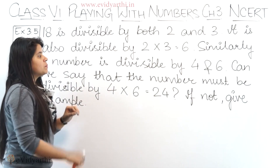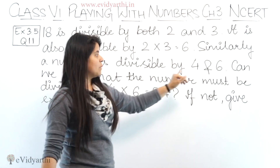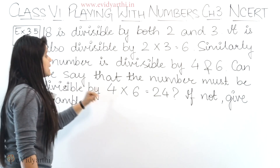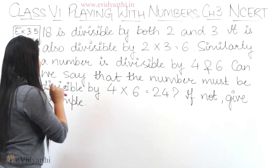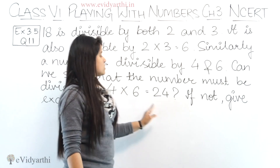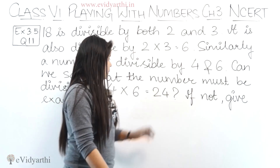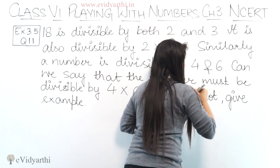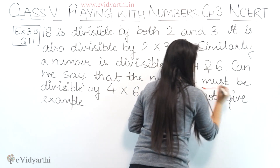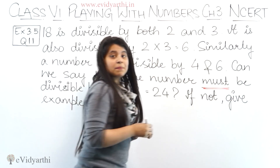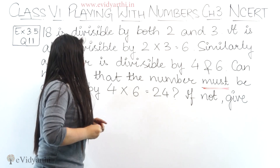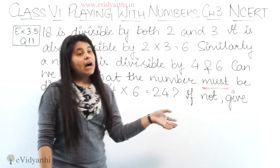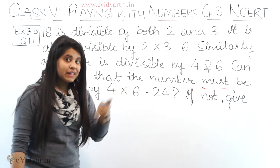Similarly, a number is divisible by 4 and 6. Can we say that the number must be divisible by 4 into 6, which equals 24? Understand the word 'must' here — must means it must always be that way. Can we say that any number divisible by 4 and 6 must also be divisible by 4 into 6, equals 24?